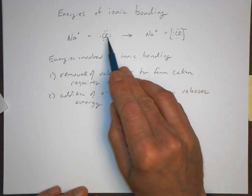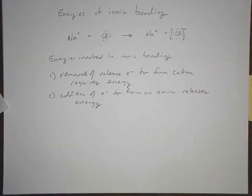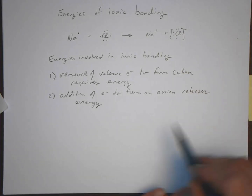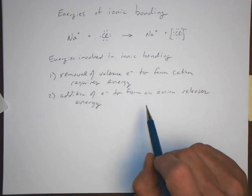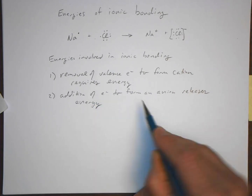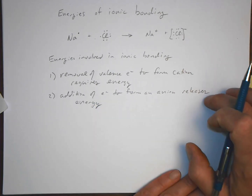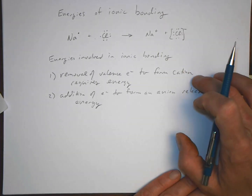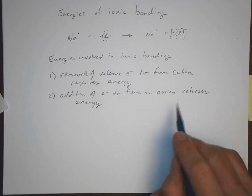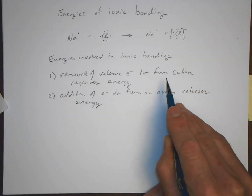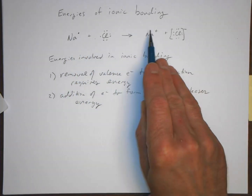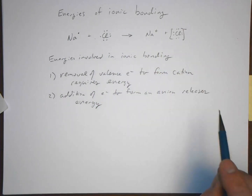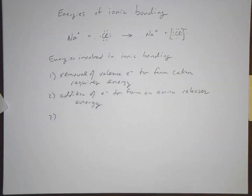Going from here to here — grabbing an electron — this is essentially electron affinity, and it releases energy. You might think this is all that's happening to form the ionic compound, but we really haven't formed the ionic compound yet. The problem is that the energy you get from making an anion is not enough to compensate for cation formation. It takes more energy to form a cation than you get back by making the anion.